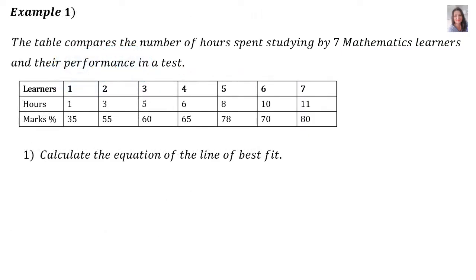Example 1. The table compares the number of hours spent studying by 7 mathematics learners and their performance in a test. You find a table with learners numbered 1 to 7, their hours studying, and their corresponding marks as a percentage. Question 1: Calculate the equation of the line of best fit or sometimes referred to as the least squares regression line.